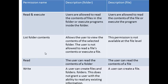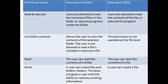Then we have list folder contents. This permission allows the user to view the contents of the selected folder — they can open the folder and view the file names — but they can't read the information in the files or run an exe file. For a file, list folder contents is not applicable.